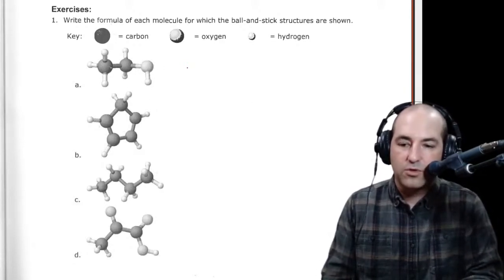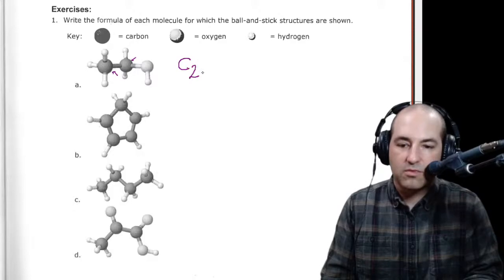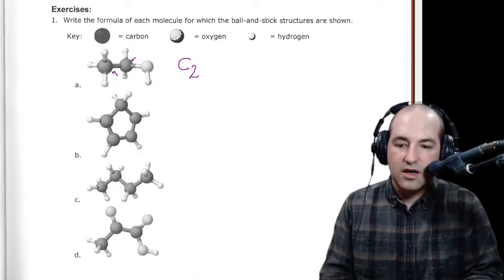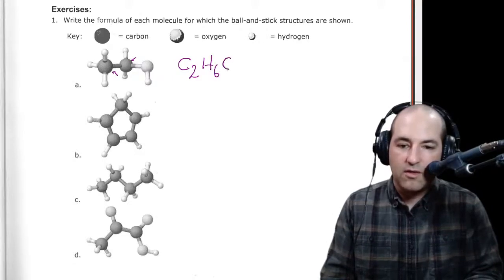So here, just for an example, we'll do this one together. I see carbon atoms right there and right there. So that tells me there's two of them. I'm going to write that as C2. Then I see hydrogens, one, two, three, four, five, six.